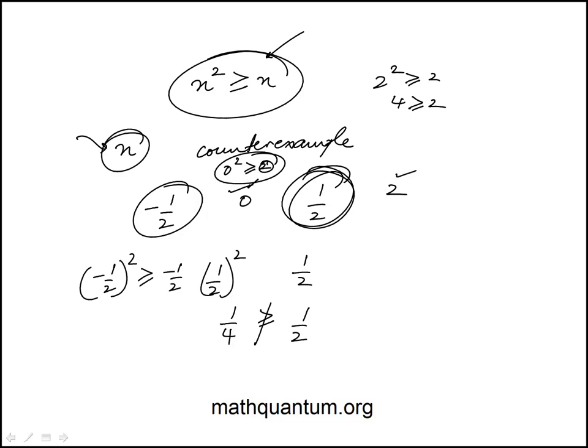Negative one-half squared is indeed greater than negative one-half because this will be positive. So the counterexample is one-half, which is answer choice C.